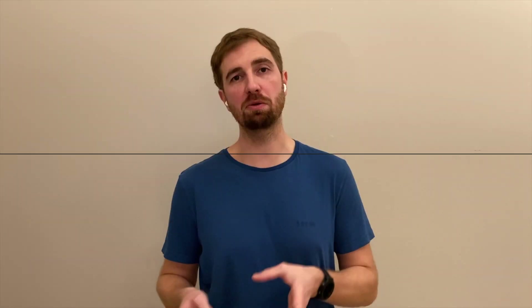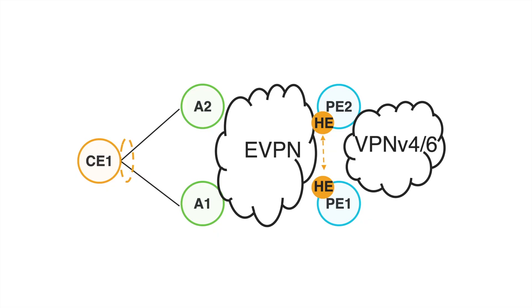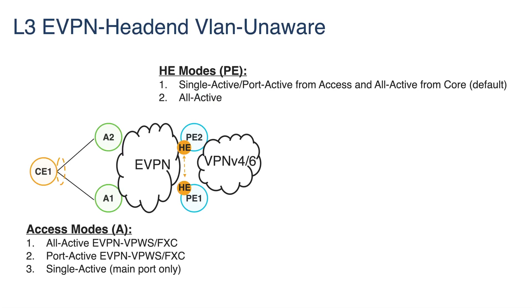Let's go directly to the first feature, which is EVPN headend. EVPN headend is a very important enhancement for the existing pseudowire headend solution. We are bringing redundancy into the access with the EVPN VPWS all-active redundancy mode, and we are also bringing headend redundancy, where basically we are using the EVPN control plane on top of the headend to decide which interface will be active and which one will be standby.